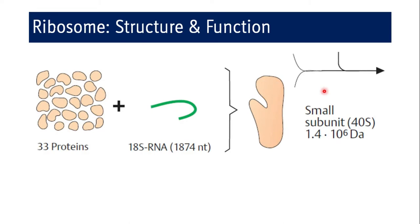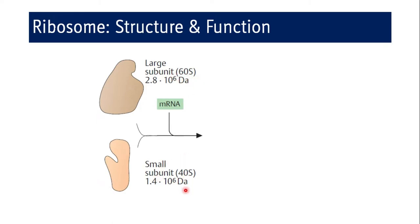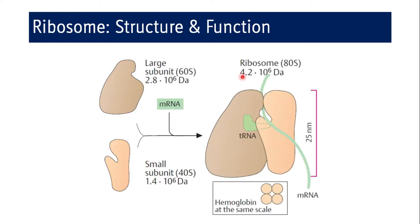How is the small subunit, the 40S subunit, formed? There are 33 different proteins and one rRNA — 18S rRNA, which has 1,874 nucleotide base pairs — that together comprise the 40S small subunit. The large 60S subunit and the small 40S subunit together form the 80S ribosome, which has a molecular weight of 4.2 × 10⁶ daltons, and mRNA binds to this for protein translation.